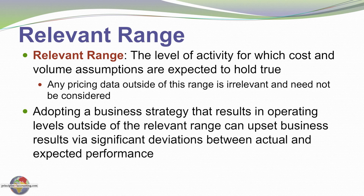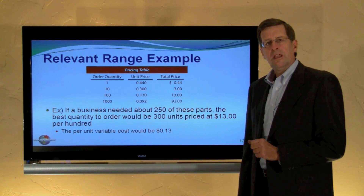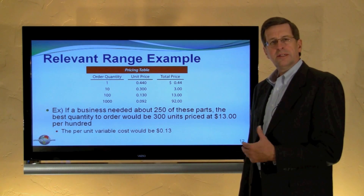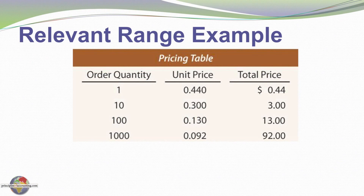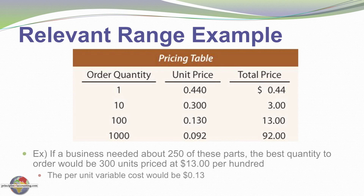Adopting a business strategy that results in operating levels outside of the relevant range can upset business results via significant deviations between actual and expected performance. Let's consider how relevant range matters in the context of ordering parts, a cost typically regarded as variable. Here I have a pricing table — you can order in quantities of 1, 10, 100, or 1,000, and the price varies considerably. If I order 10 units, the cost is 30 cents per unit, or $3 for 10. If I order 100 units, the price drops to 13 cents per unit, and even lower at 1,000 units. If I need 250 units, I need to study that table carefully to determine the correct ordering strategy.